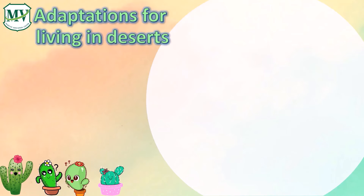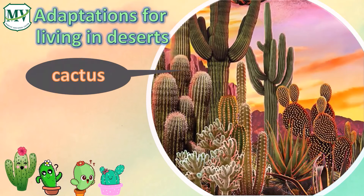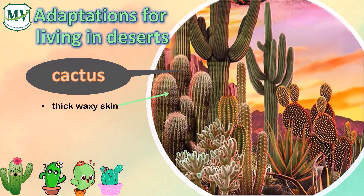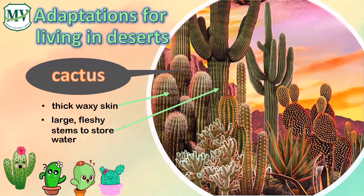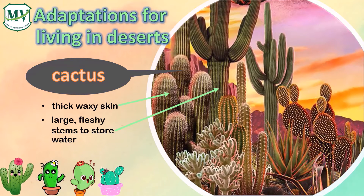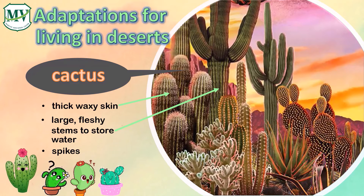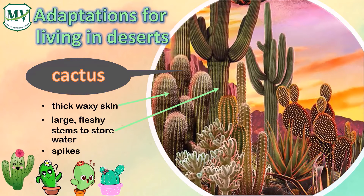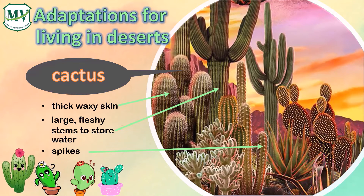Now the third adaptation is for plants living in deserts. For example, cactus. Cactus has a thick waxy skin to reduce loss of water and to reflect heat. It also has a large fleshy stem to store water. Another unique characteristic of a cactus is that it has thorns and thin spiky or glossy leaves to also reduce water loss. In addition, its spikes protect cacti from animals wishing to use their stored water.